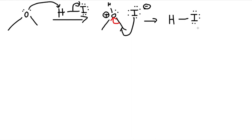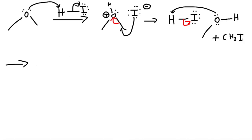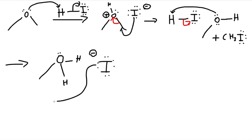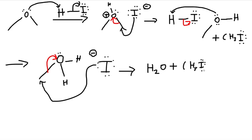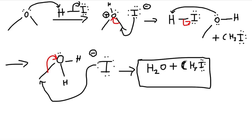We would have HI again and use it again. Now our product would be an oxygen with two lone pairs and a hydrogen. Oxygen goes to hydrogen again and kicks off iodide, producing CH3I as a byproduct. Now we have oxygen with one lone pair and two hydrogens with a positive charge. Iodide comes in as a nucleophile, grabs that carbon, kicks off electrons to oxygen, forming water plus CH3I. So basically, we just grab the carbons each time.